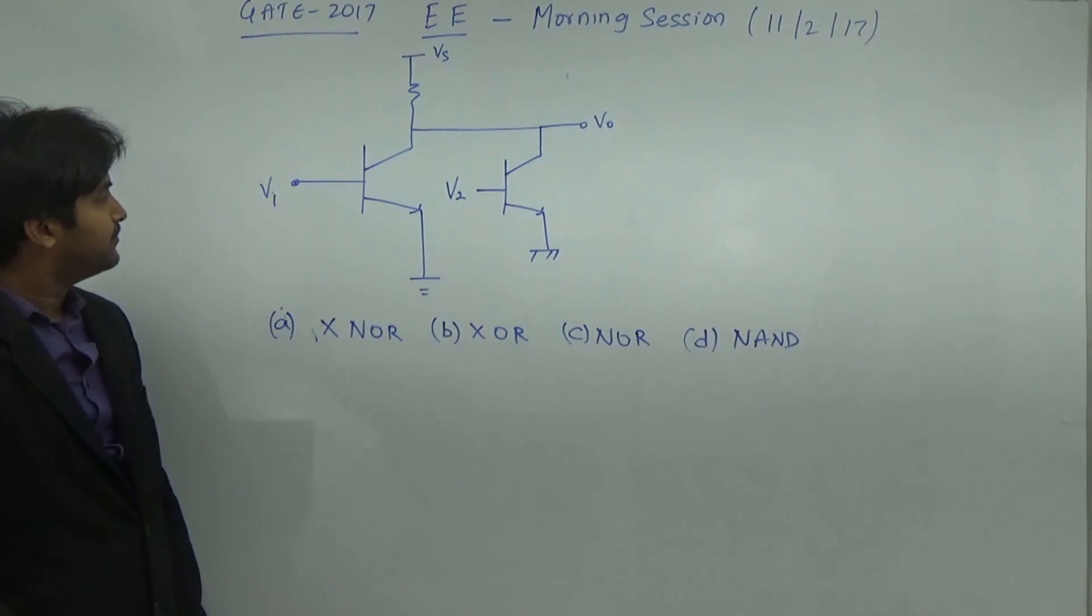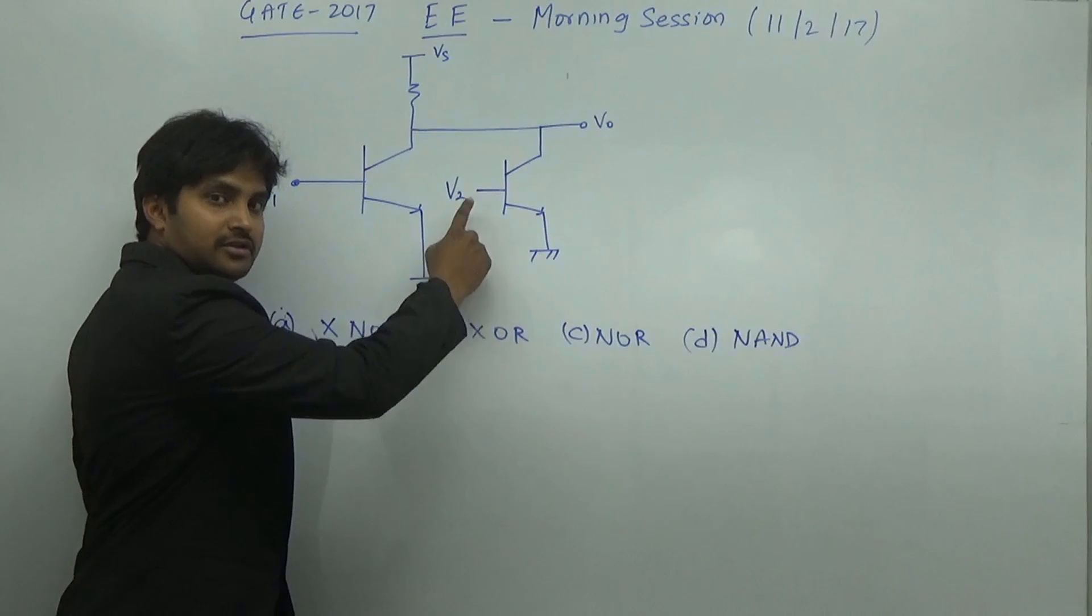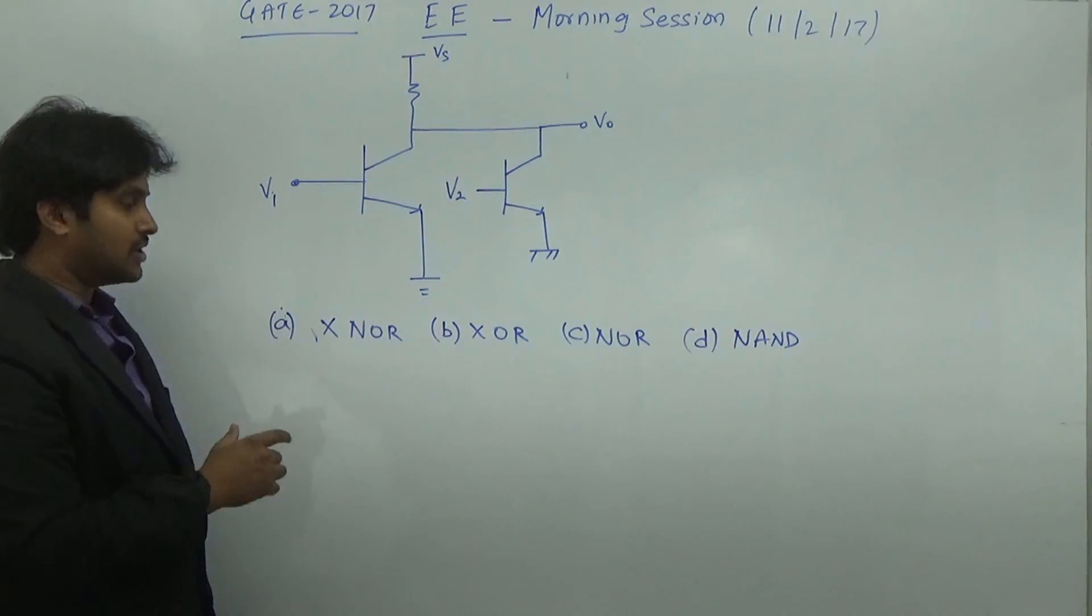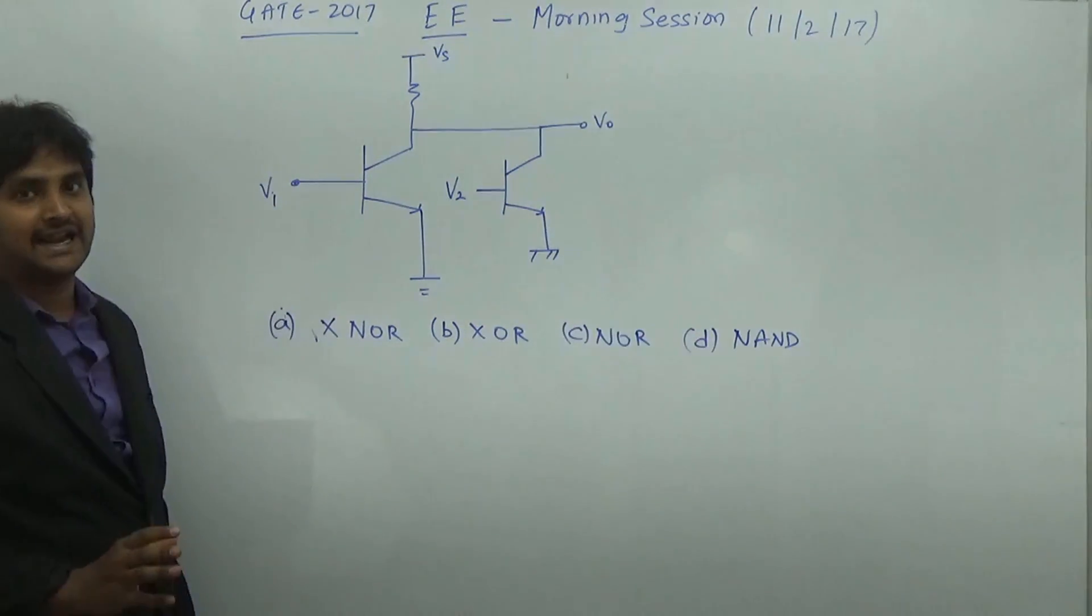There are two BJTs which are given. The first BJT is connected with V1, the second BJT is connected to V2. Now, what is asked here is which type of gate it is: NOR gate, XNOR gate, XOR gate, or NAND gate.